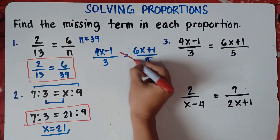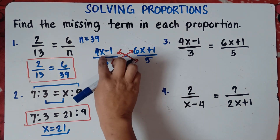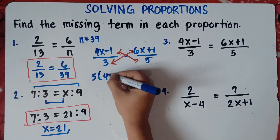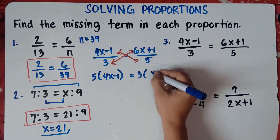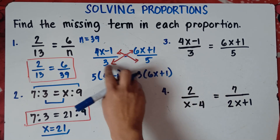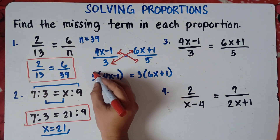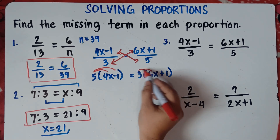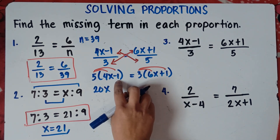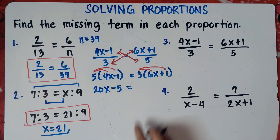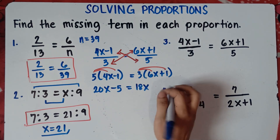We cross multiply. So this will be 5 times (4x minus 1) equals 3 times (6x plus 1). Since these are binomials, we need to distribute. So: 5 times 4x is 20x; 5 times negative 1 is negative 5. Equals: 3 times 6x is 18x; then 3 times 1 is positive 3.